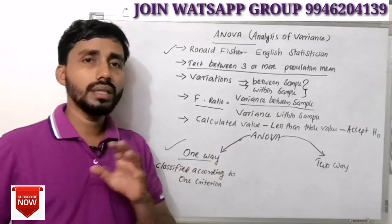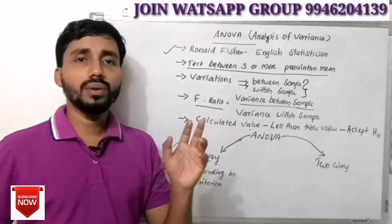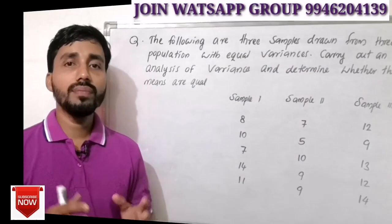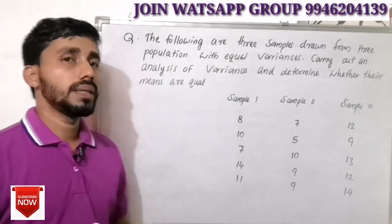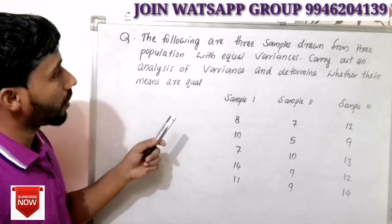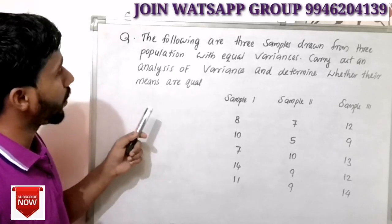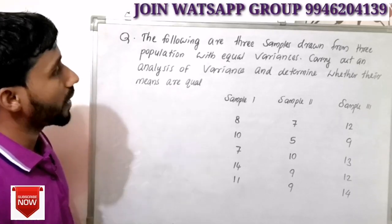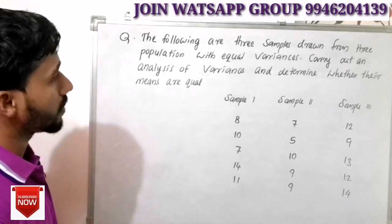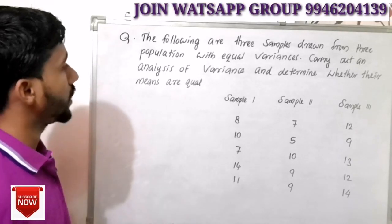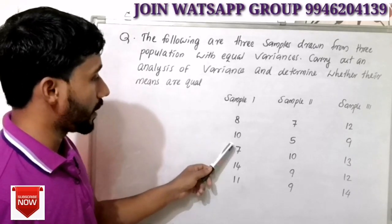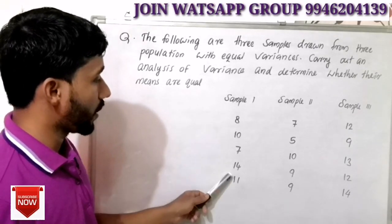We have a question about how to work out one-way ANOVA. It is drawn from three populations with equal variances. Carry out an analysis of variance and determine whether their means are equal. Sample 1 values: 8, 10, 7, 14, 11.